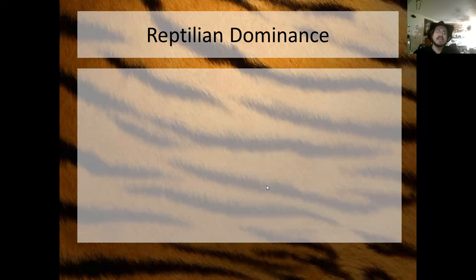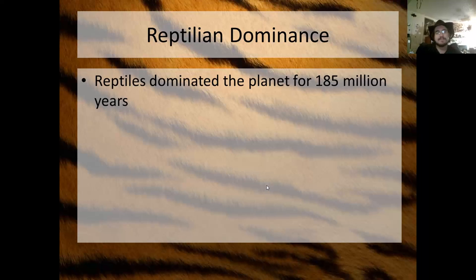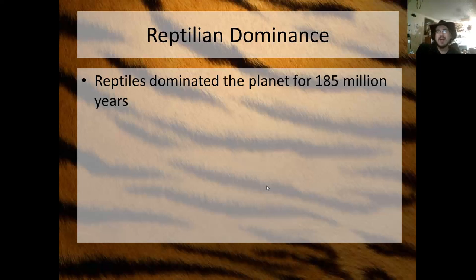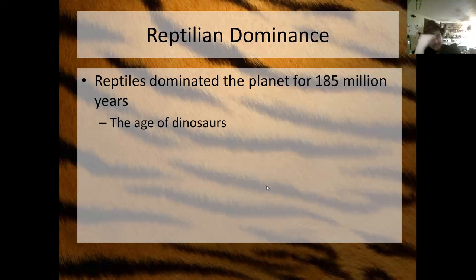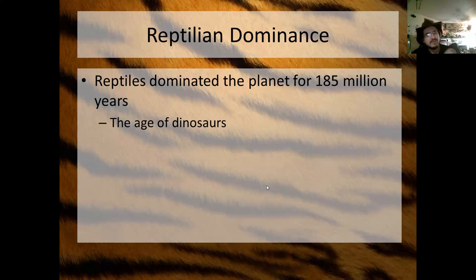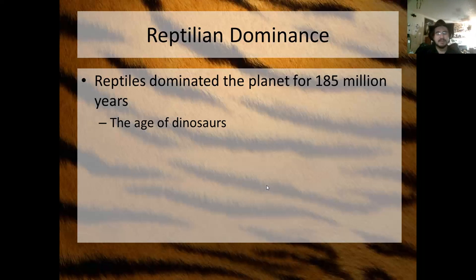There was a period in Earth's history when reptiles dominated the planet. For 185 million years, the dominant animal life on the planet was reptiles — specifically the dinosaurs. Just to show that biology is dynamic: there are people who classify dinosaurs as a subclass of Reptilia, and people who classify them as class Dinosauria. We're going to group dinosaurs under class Reptilia because that's how the textbook does it, though that classification is still in flux and debated.